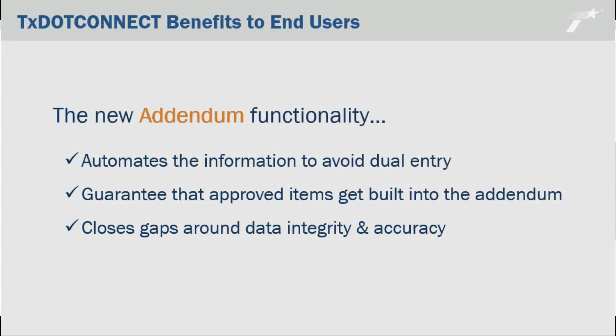Yes, this addendum process does two things for end users that I think are important. One is that it automates a lot of the information so that end users are not having to constantly re-enter their information in several places — that's annoying. The other thing it accomplishes is that it's going to guarantee that the items included in the addendum request that was approved by the agency actually get built into the addendum. Historically, the mainframe system was very manual and there was the ability to either omit items or include additional items that were not in the addendum approval, which required the agency to take an additional step to ensure those items got approved. We're eliminating that with this structure. So by tracking and automating some of that process, we eliminate room for those kinds of problematic errors. Absolutely.